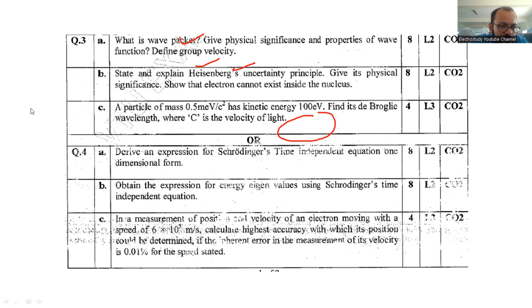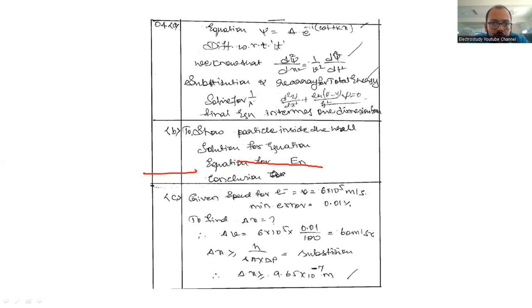Question number 4a: derive expression for Schrödinger time independent equation for one dimensional form. You have to prove the equation. First of all, write equation for psi, differentiate with respect to t. Then we will be getting ultimately this final equation. Next, substitute and redefine for total energy. You have to reach this equation. Find the equation in terms of one dimension. That is the instruction given in the question.